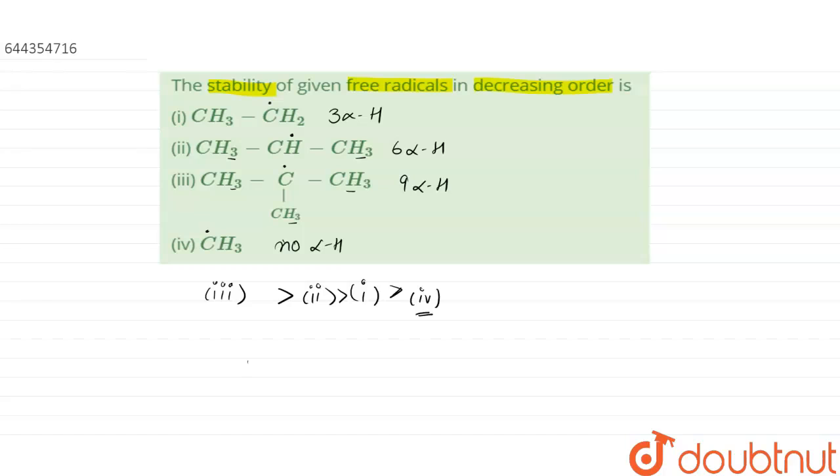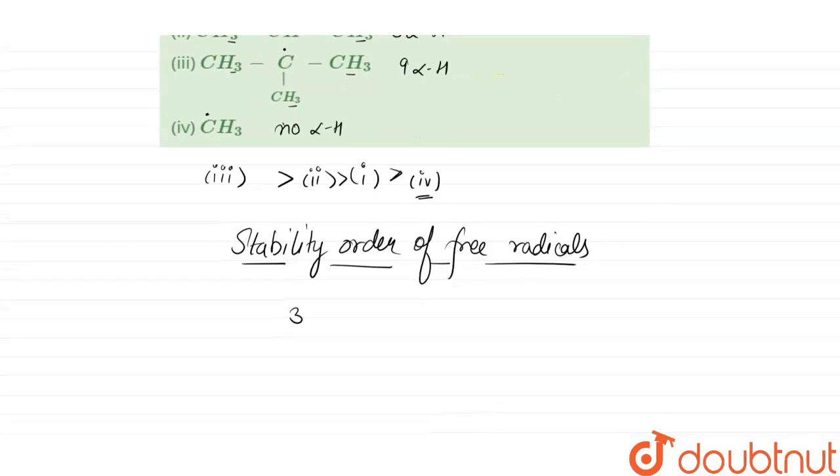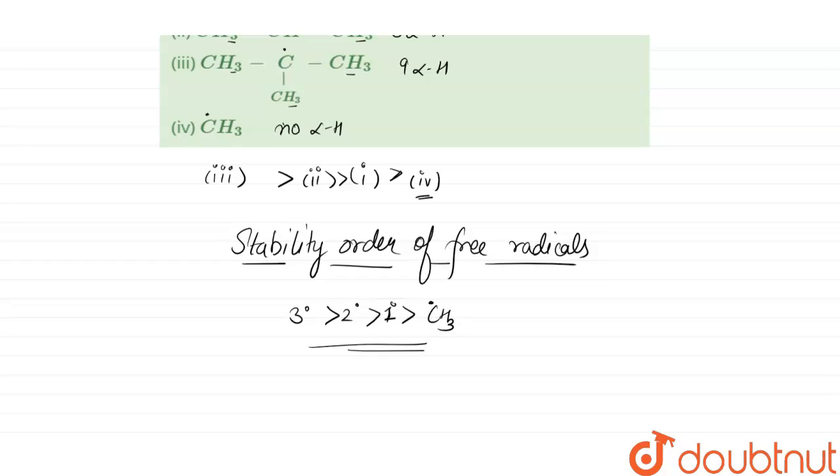The other way is the stability order of free radicals is similar to that of carbocations. So it will be three degree, two degree, one degree, and methyl radical, that is CH3 radical. So we can have a look at this way also.